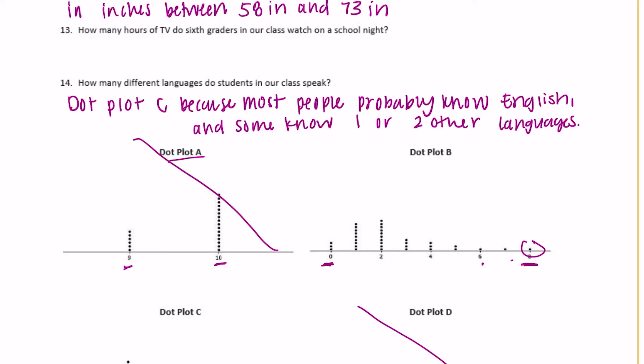And then how many hours of TV do sixth graders watch on a school night? So that would be, we're left with anywhere between zero and eight, which makes sense. Some people might say, I don't watch much TV. Some people watch a lot of TV. Most people are around like two hours or less. All right. And that is the end.